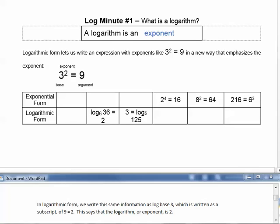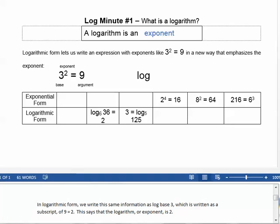In logarithmic form we write this same information as log base 3, which is written as a subscript, of 9 equals 2. This says that the logarithm, remember a logarithm is an exponent, so the logarithm, or exponent, is 2.